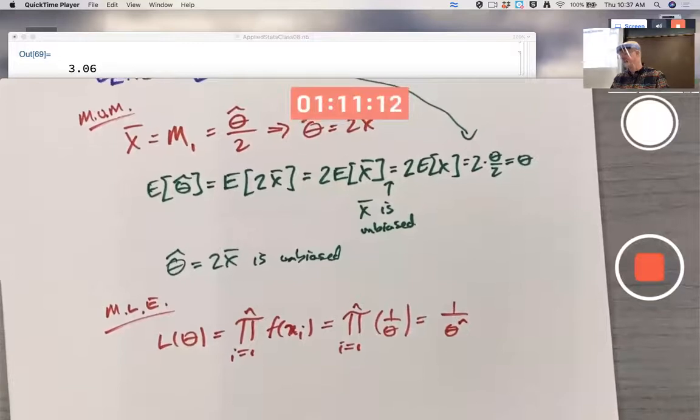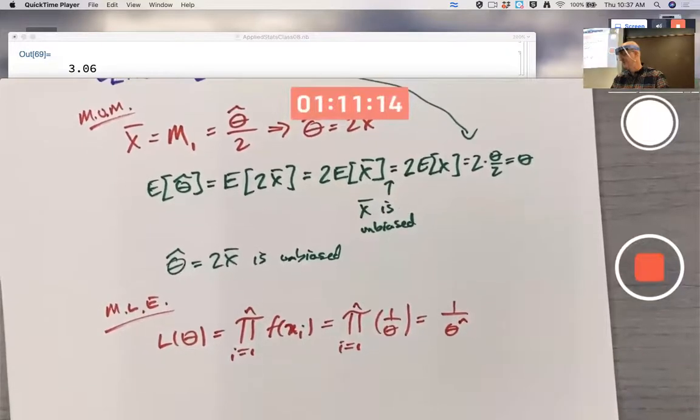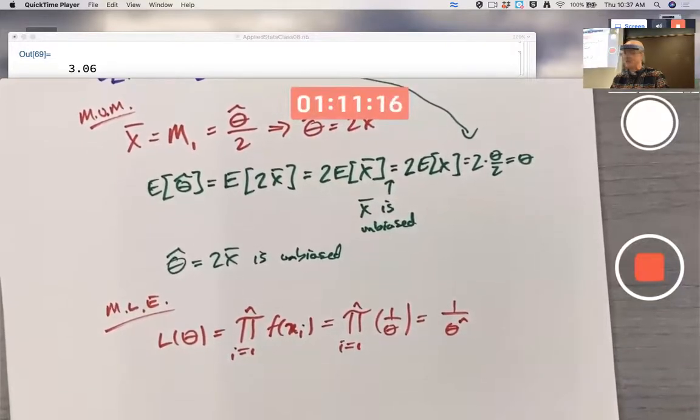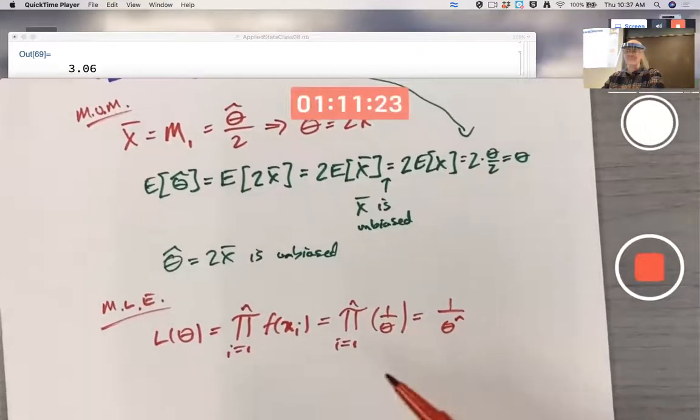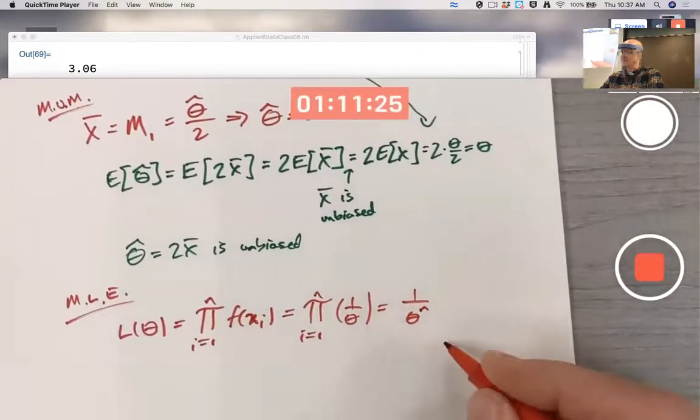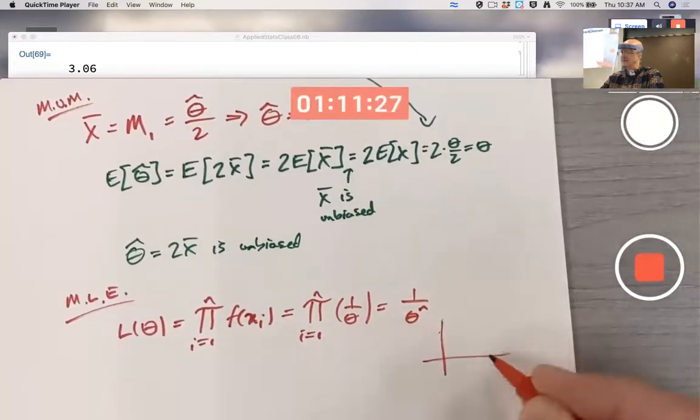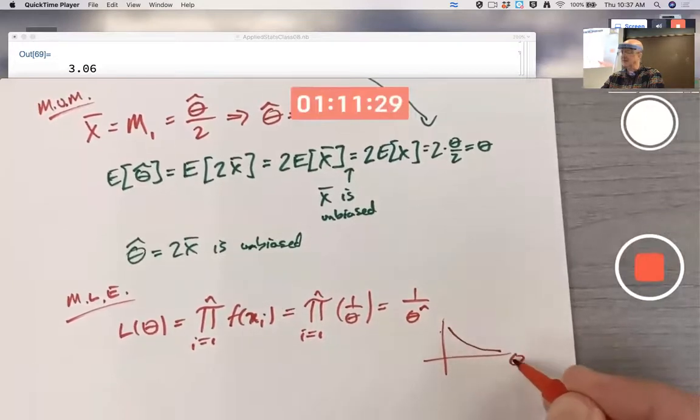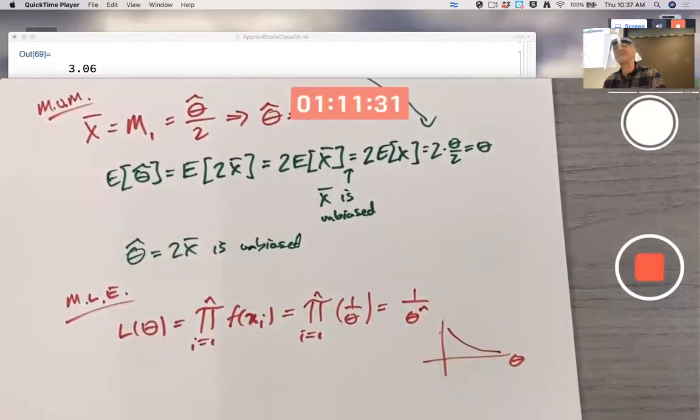I could take the logarithm, but I don't really need to. I'm trying to choose the value of theta that maximizes this. N is positive. The graph of this is decreasing with a vertical asymptote at zero. But then theta can't be zero. That doesn't make any sense.